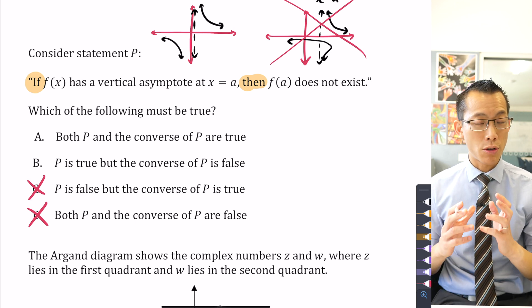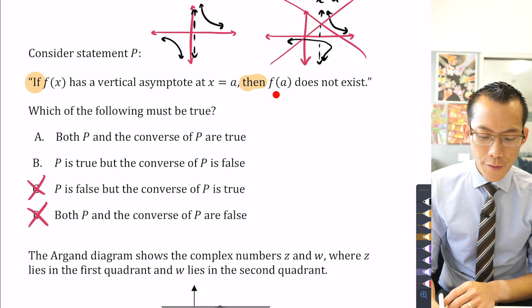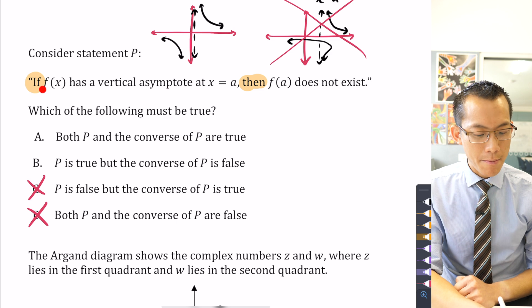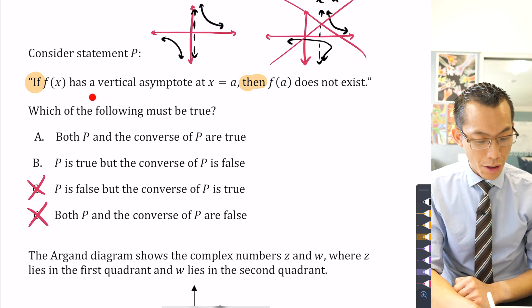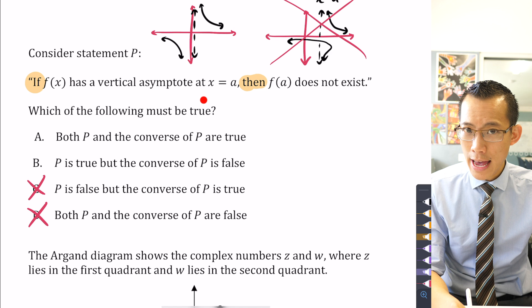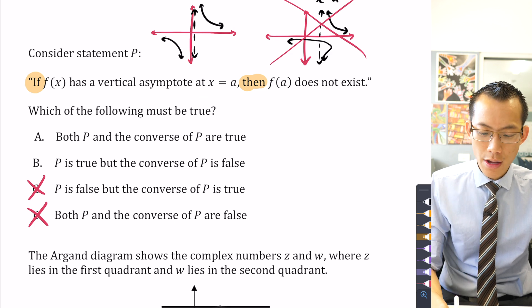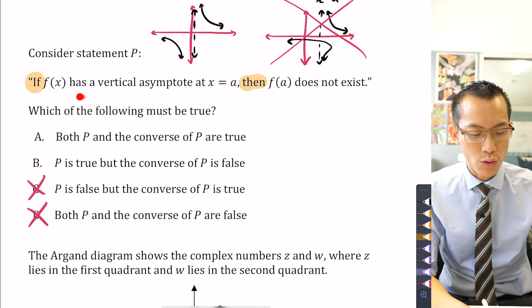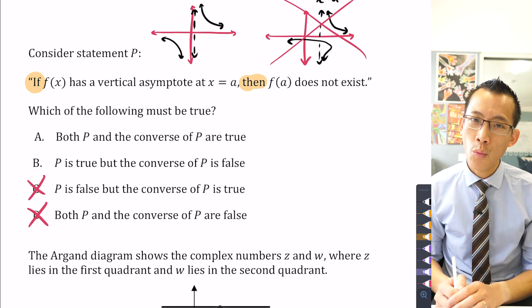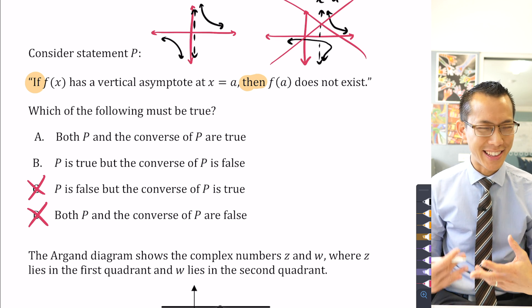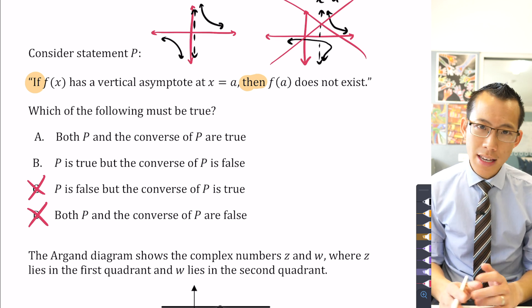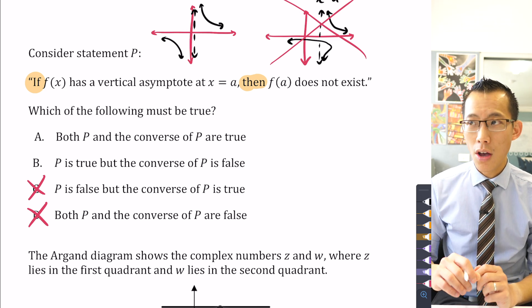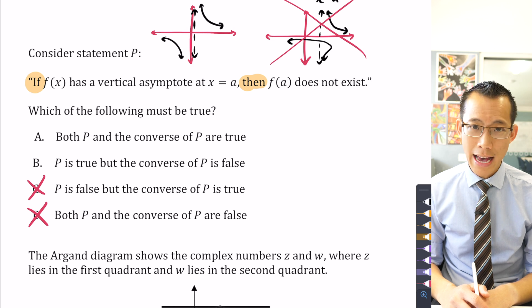So I would say the converse could be stated as: if f(a) doesn't exist, does that then mean f(x) will then have a vertical asymptote at x equals a? Is it true that f(a) not existing definitely guarantees you have a vertical asymptote? Now, hopefully in the way that I'm saying it and pausing on it and lingering, you're seeing this can't possibly be true.